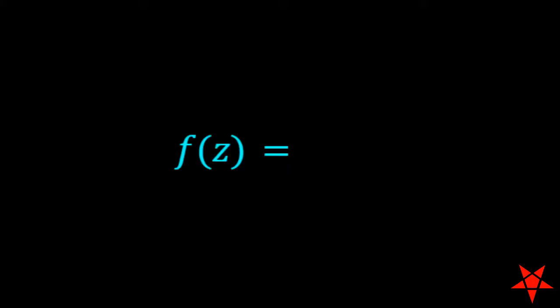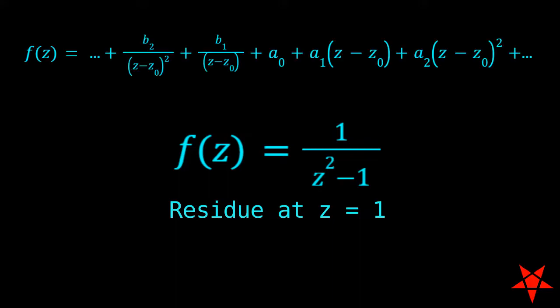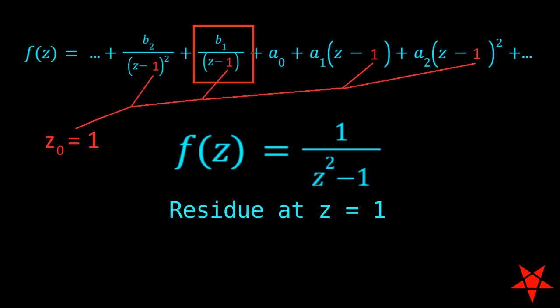Part A. For f of z equal to 1 over z squared minus 1, we are looking for the residue at z equal to 1. As stated earlier, we will determine the residue by calculating the Laurent series for f of z, which will give us our answer in the b sub 1 term. In order for the b sub 1 term to yield the residue of f of z at z equals 1, the Laurent series needs to be centered at z equals 1. Thus, we seek a Laurent series of the form shown here, with all terms being powers of z minus 1.